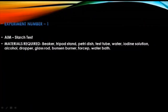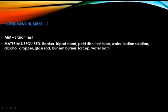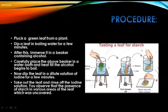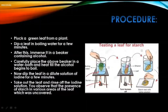The materials required for the starch test are: a beaker, a tripod stand, a petri dish, test tube, water, iodine solution, alcohol, dropper, glass rod, Bunsen burner, forceps, and a water bath. You can see the setup — this is the Bunsen burner, there is boiling water inside the glass container, and we have taken a leaf. Let us read what we have to do for this experiment.